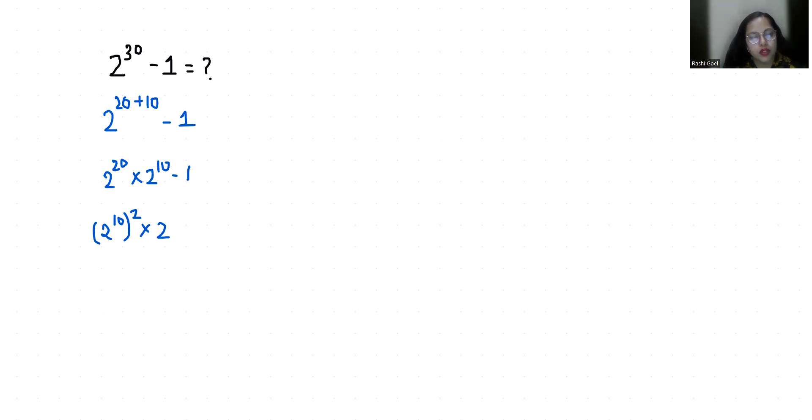So 2 power 10 is 1024, we know that. So put the value 1024 whole square times 1024 minus 1. So this 1024 I can write it as 1000 plus 24 whole square times 1024 minus 1.